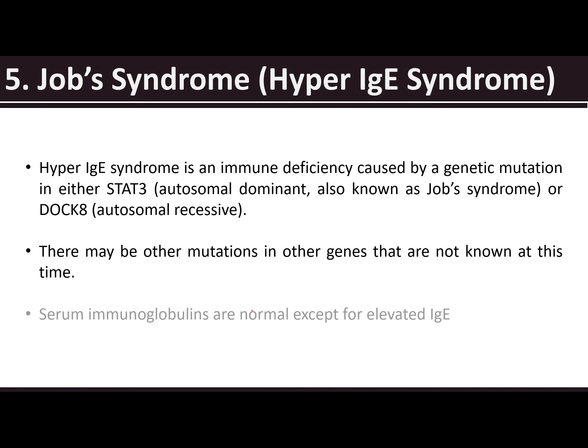Then we have Job syndrome, or hyper-IgE syndrome. This is caused by a genetic mutation in either STAT-3 (autosomal dominant, also known as Job syndrome) or DOCK8 (autosomal recessive). There may be other mutations in other genes not known at this time. Serum immunoglobulins are normal except for elevated IgE.